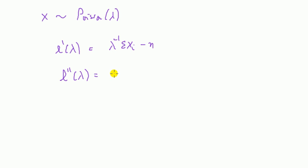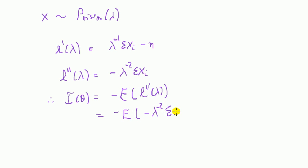Therefore, the information number is minus the expectation of this. This is a product of a parameter—it's a constant—and the x's are random because each of these x's follow a Poisson distribution.